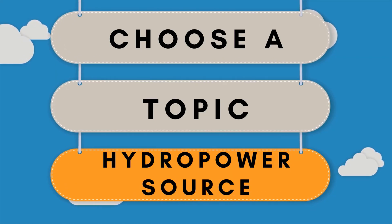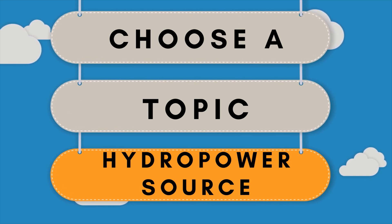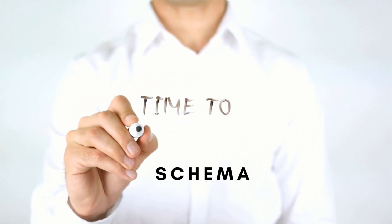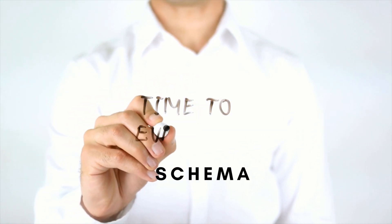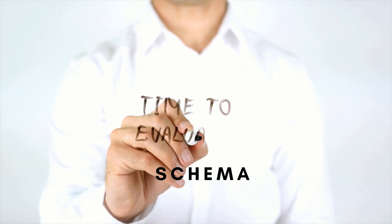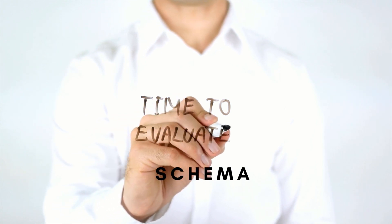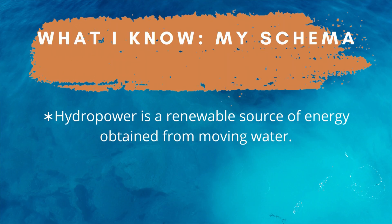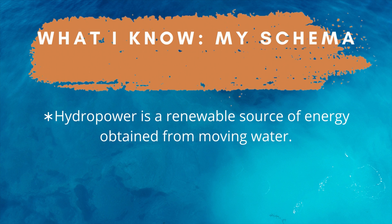First, choose a topic — for example, hydropower source. Second, evaluate your own schema about the chosen topic. For example, hydropower is a renewable source of energy obtained from moving water.